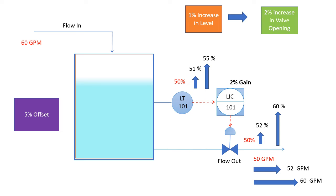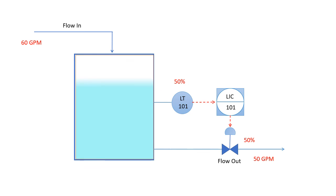One of the easiest ways is to increase the gain. Suppose you increase the gain to 5 percent. Now for 1 percent increase in level will cause 5 percent increase in valve opening.